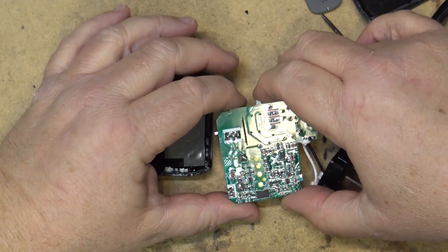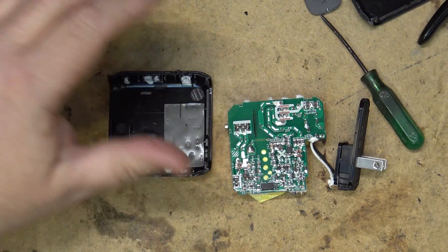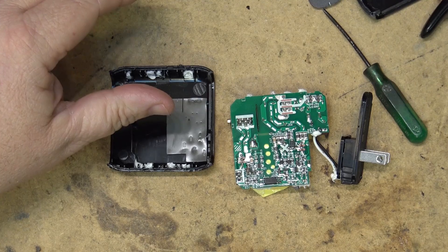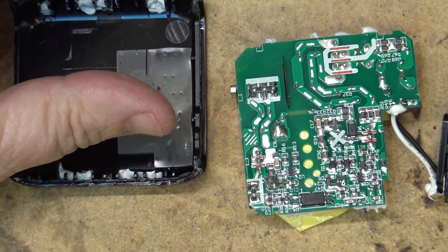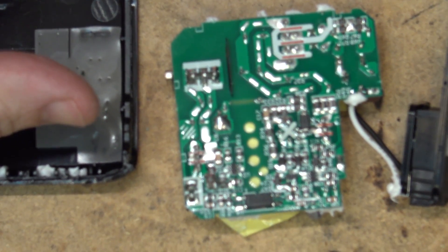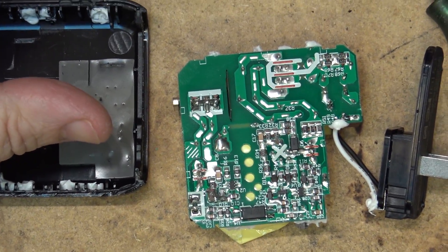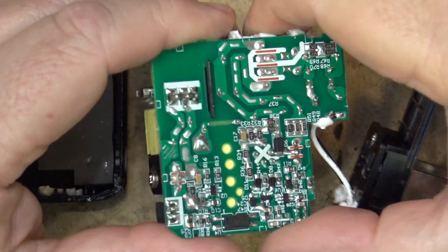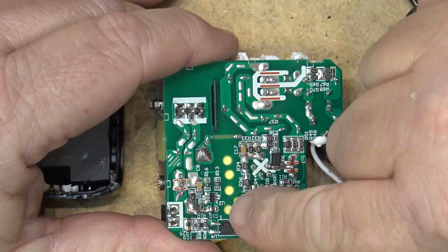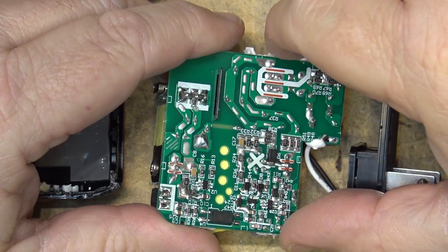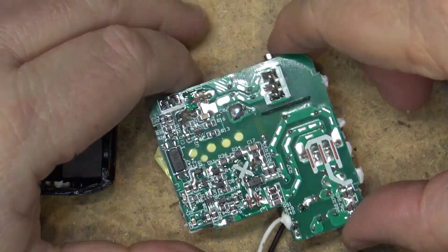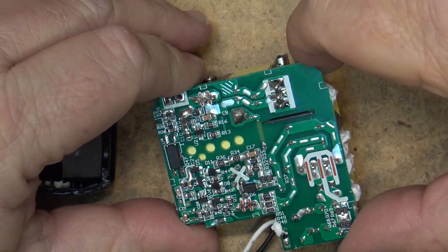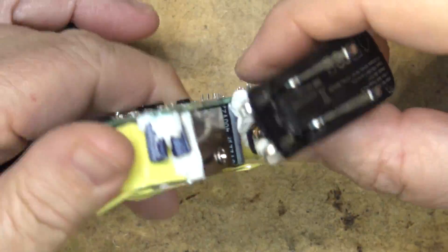The soldering on here is actually very good. Let's get a closer-up view of the actual circuit board. As you can see, surface-mounted components - they all look to be good quality connections. I see nothing wrong here with the design.